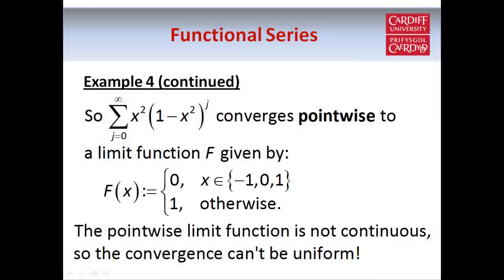However this limit function is obviously not continuous — it has points of discontinuity at zero, one and minus one. We saw when discussing functional sequences that if the pointwise limit function is not continuous and the terms in the sequence are continuous, then the convergence cannot be uniform. This is a theoretical result which holds for functional series as well. So since the pointwise limit function is not continuous, we can say that the convergence is not uniform.